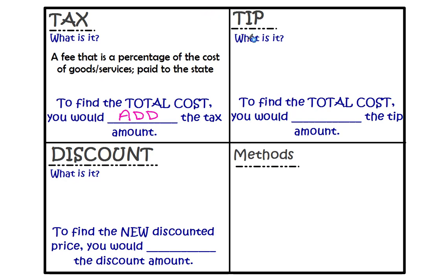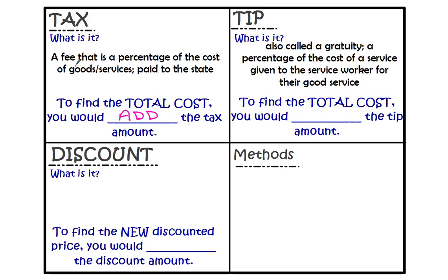Tip — what is tip? Tip, which is also called a gratuity, is a percentage of the cost of a service given to the service worker for their good service. A lot of you are familiar with going out to eat and your parents leaving a tip. If your waiter or waitress does a really good job — fills up your drinks, brings your food out hot, gets your order correct, and gives you good service — then you want to leave a tip. To find the total cost, you add the tip amount. You can also leave tips at hotels for maid service, for people who deliver and install furniture or major electronics, or if someone cleans your carpet and does a really good job.